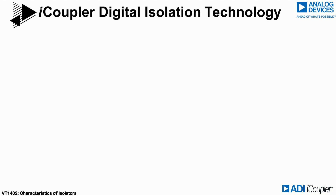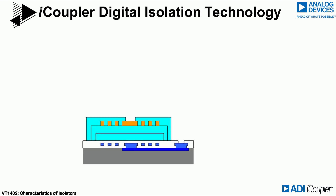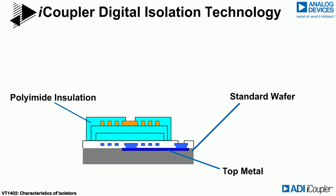Let's talk about I-coupler technology in a bit more detail. This diagram shows a cross-section of a standard silicon wafer in grey, with metallisation shown in blue. That top metal layer is used to create one of the transformer coils. The lighter blue material is the polyimide, deposited in multiple layers on top of the wafer. Gold coils are patterned on top of the polyimide, and a protective layer is then blanketed over the surface.